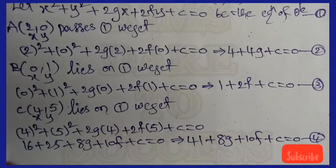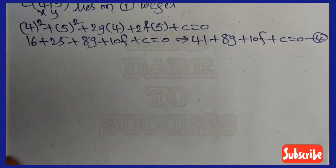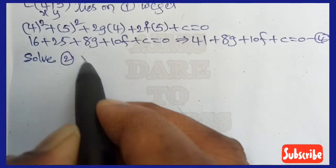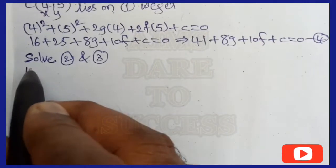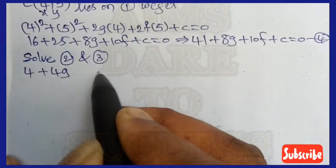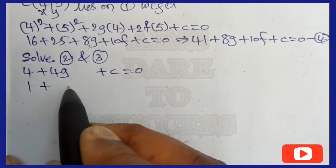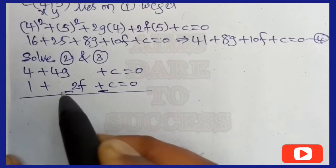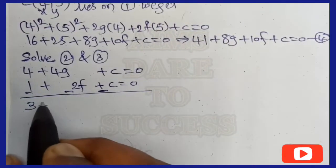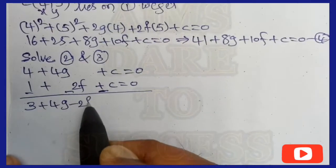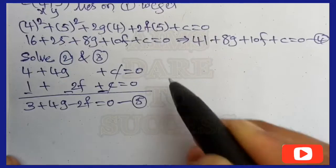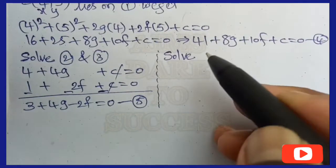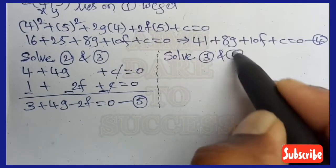We have 3 equations, so using these we can solve. First, solve Equations 2 and 3: Equation 2 is 4 + 4g + c = 0, Equation 3 is 1 + 2f + c = 0. Subtracting to remove c: 4 − 1 + 4g − 2f = 0, giving 3 + 4g − 2f = 0. Let this be Equation 5.